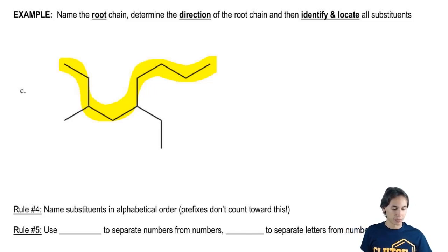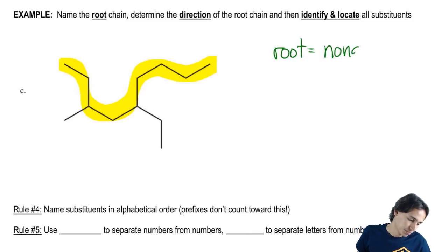So how many is that? That looks like one, two, three, four, five, six, seven, eight, nine. So this is going to be that the root equals nonane. Cool with that so far?